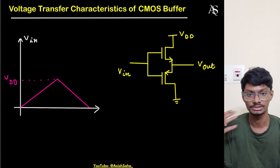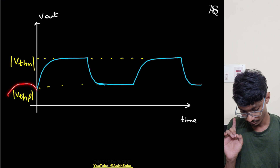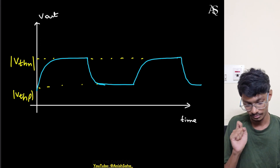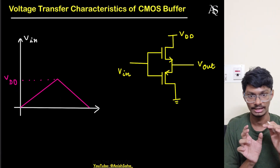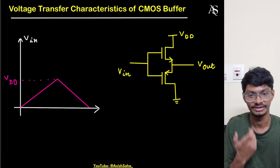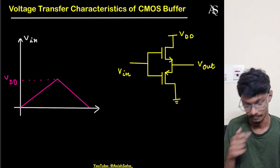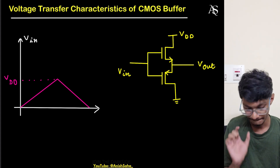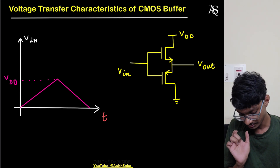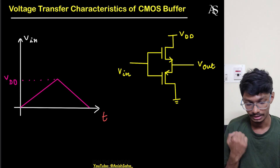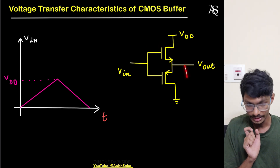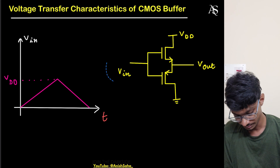From the pulse input analysis, if the input is zero, our output is at |Vthp|. So the first assumption we take is that the output has already reached that state. If the input is zero, the output will remain at |Vthp|. To understand this, you should watch the previous video. Now, our input is increasing from zero to Vdd like a ramp — so will any NMOS or PMOS turn on?